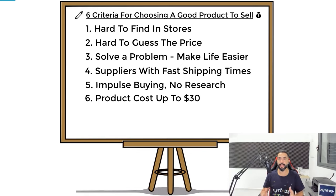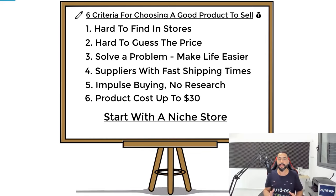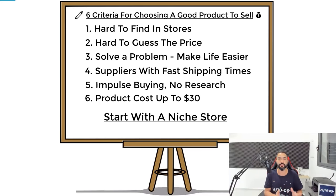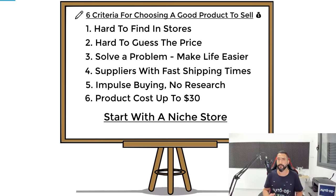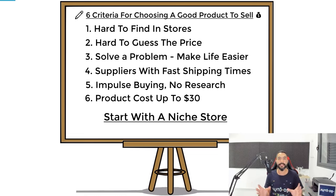Before we move on, you need to know the difference between a general store, a niche store, and a one-product store. As a beginner, it is much better to start with a niche store. When you have a niche store, you can start narrowing it down once you have a winning product. It simply looks much better than a general store, which just has a whole bunch of randomized products with nothing to do with one another — it looks unorganized and unprofessional. As for one-product stores, this can also be a good idea, but only once you have vast experience in the dropshipping world. Start with a niche store, which you will be able to brand professionally, and slowly you can start narrowing down the winning niche.